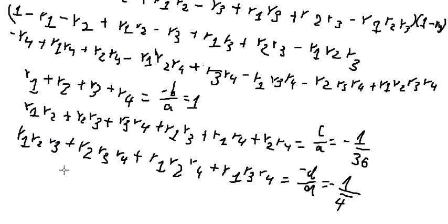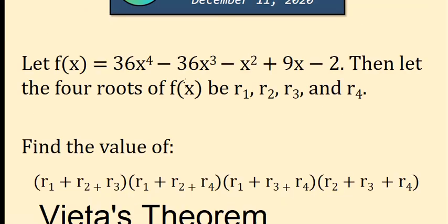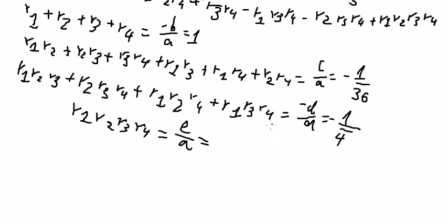And the last one, r₁r₂r₃r₄, that should be e over a. e is negative 2 divided by 36, you got negative 1 over 18.